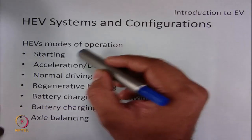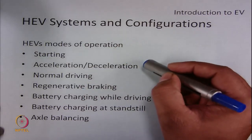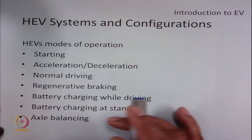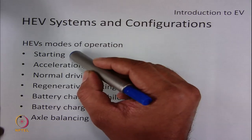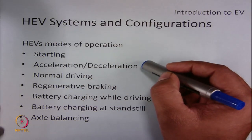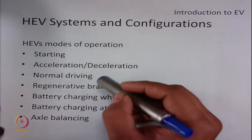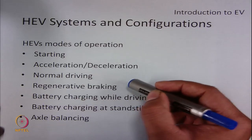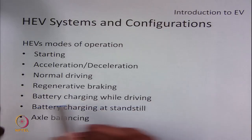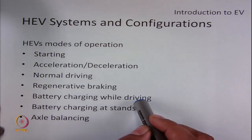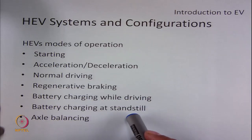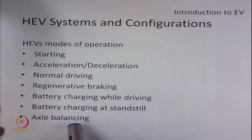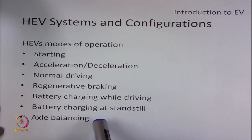When a HEV is used for driving a vehicle, it needs to operate in various modes, like starting the system, acceleration and deceleration, normal driving, regenerative braking, and charging of the battery when the vehicle is in motion or at rest. There is a mode known as axle balancing, which is possible in complex HEVs.